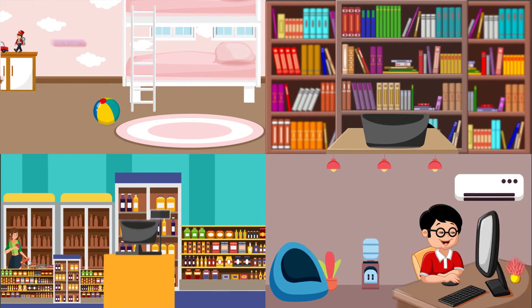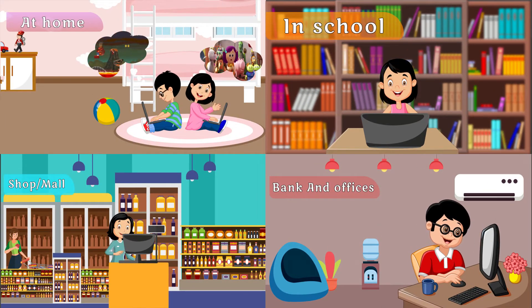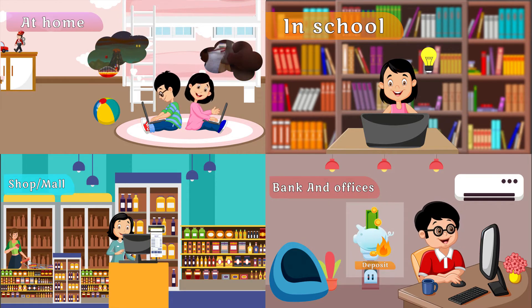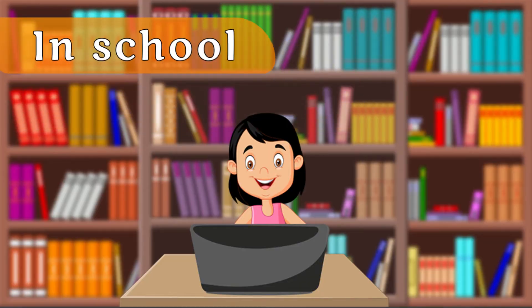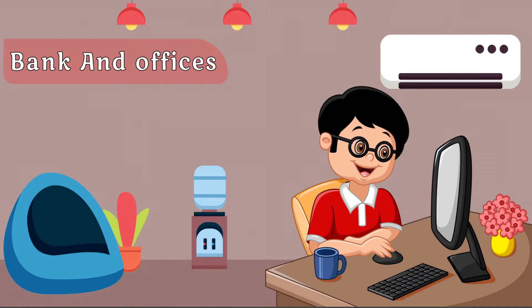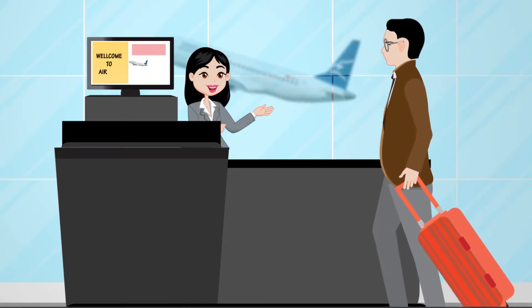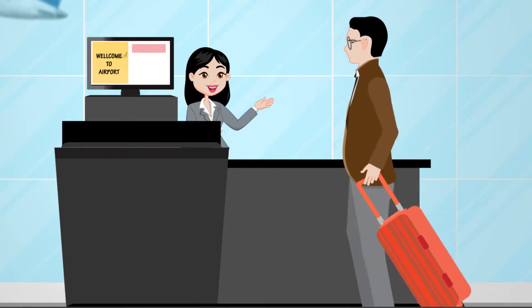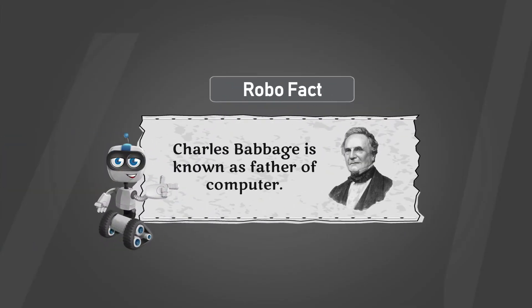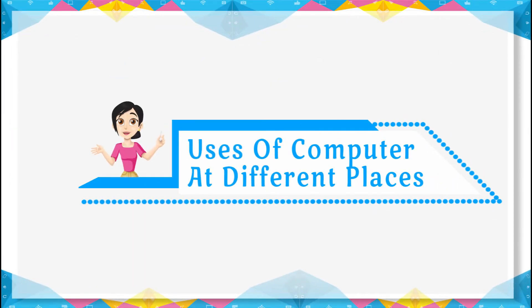Today we can get computers everywhere. The computer has become a very useful machine in day-to-day life. We have computers at homes, schools, shops, malls, hospitals, banks, railway stations, and airports. Robo fact: Charles Babbage is called the father of computers.